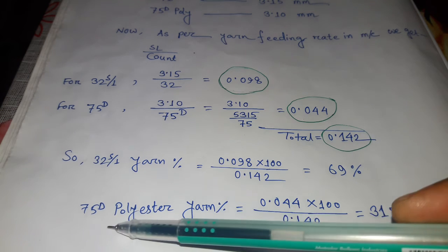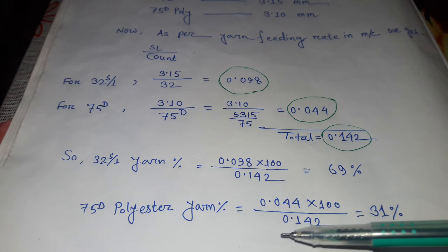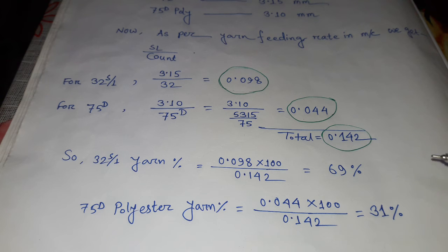This is 75 denier polyester yarn percentage. In this way we can calculate plated jersey yarn percentage.